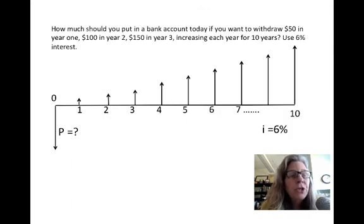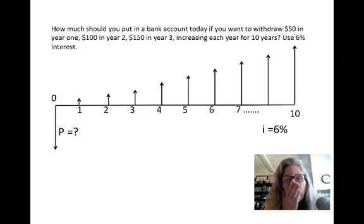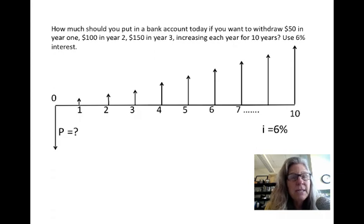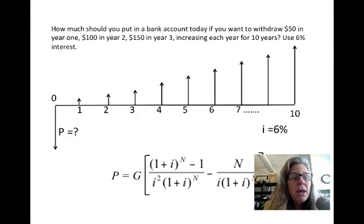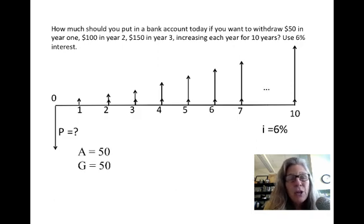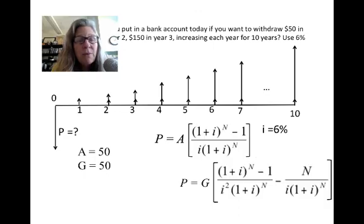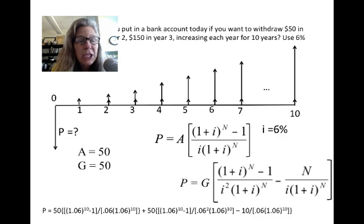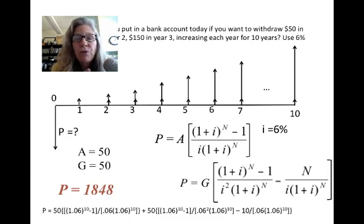Let's look at a gradient problem. How much should you put in a bank account today if you want to withdraw $50 in one year, $100 in two years, $150 in three years, increasing each year at 6% interest for 10 years? There is an A value of $50 occurring each period, and the G value of $50 begins in year two. Adding the A and G components together, the result is $18.48.